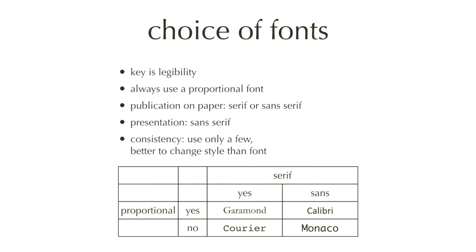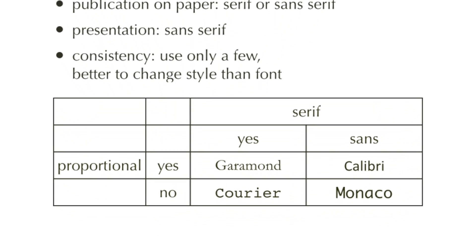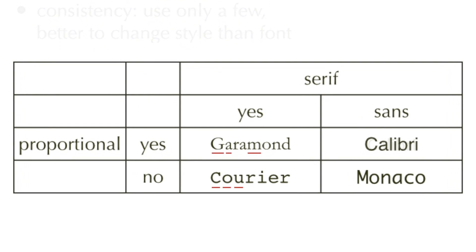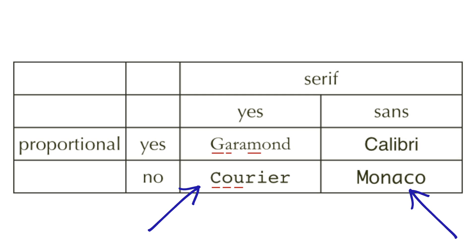The next item is the choice of fonts, and the key here is always legibility, which means you have to use a proportional font. Proportional means that each letter has its own width on the page, so the 'I' has a little bit of space and the 'M' has a lot of space. In the table you can see that Garamond and Calibri are proportional fonts, whereas Courier and Monaco are not — the latter two look a little bit like typewriter letters.